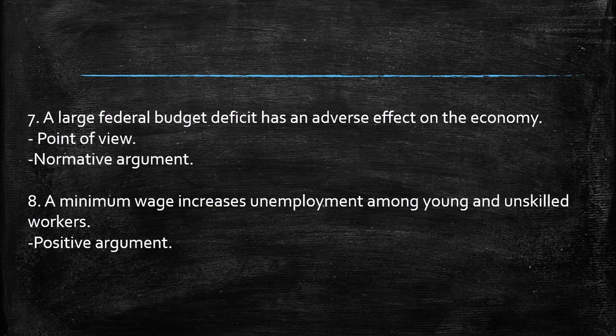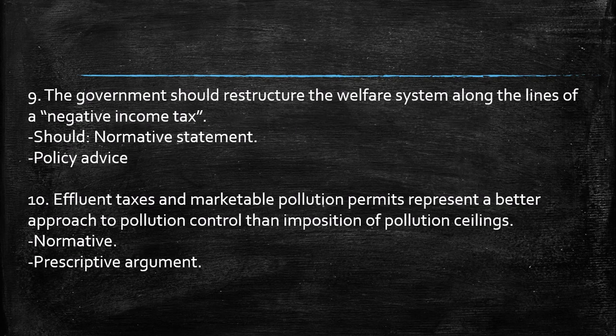The seventh statement is: large federal budget deficits have an adverse effect on the economy. This is a point of view, so we are talking about a more normative argument. The next statement is: a minimum wage increase raises unemployment among young and unskilled workers. When we look at the data this is true, and we are talking about a descriptive statement, so I would say this is a positive argument.